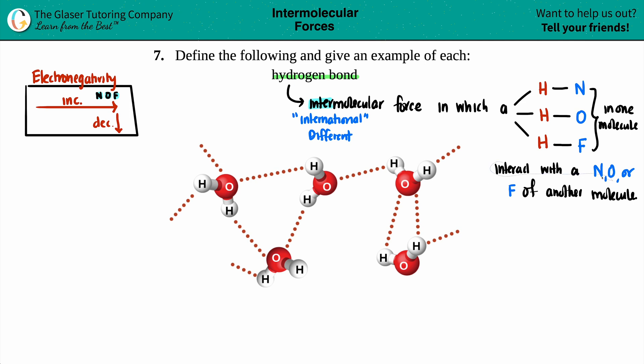So basically, if you can spot out that your molecule has an H-N bond, an H-O bond, or an H-F bond, that bond, or that molecule, can have hydrogen bonding with itself. And the example that is given here is water.